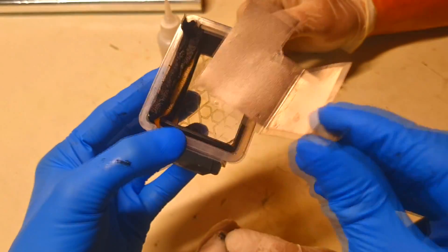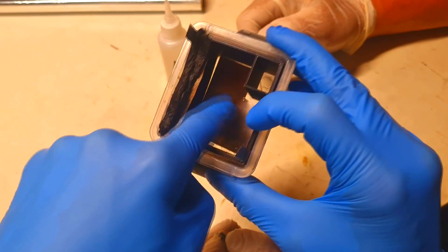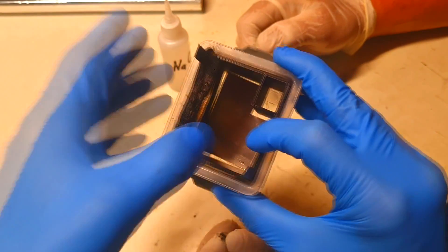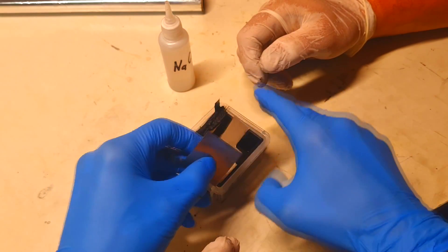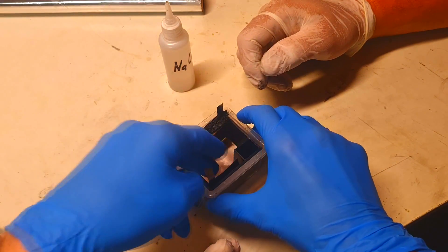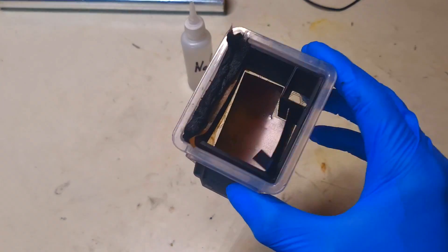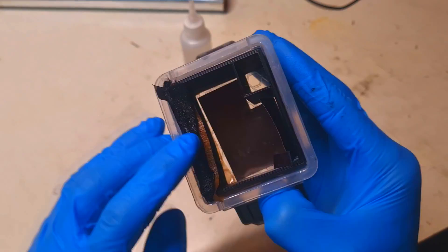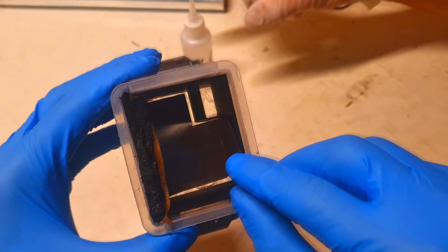This current collector will fill this bottom space. Like so. And now the cell is almost ready. Here is the air cathode, and the negative current collector is also in place.